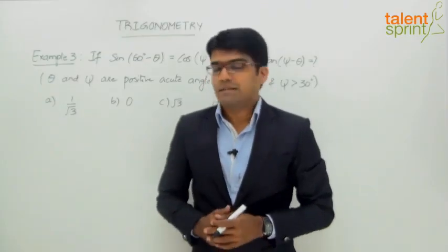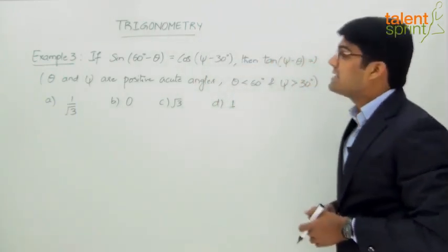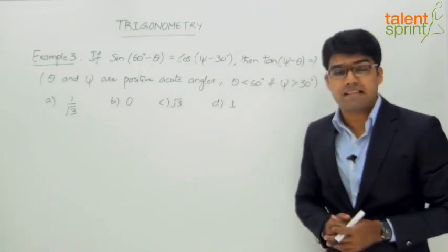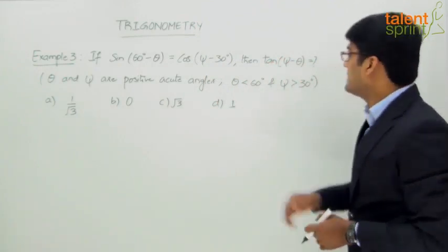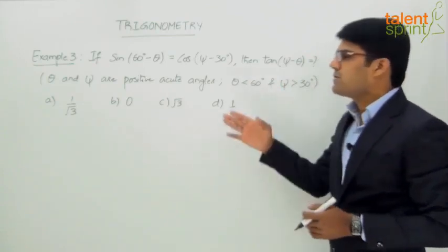Let us now look at Example 3. The question says: if sin(60° - θ) = cos(ψ - 30°), then tan(ψ - θ) is equal to what? It also mentions...